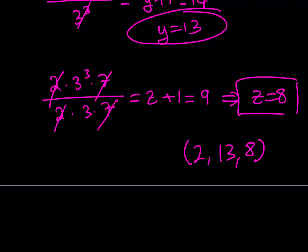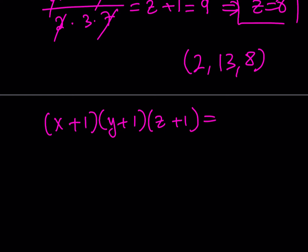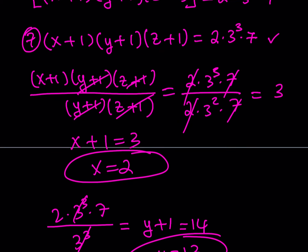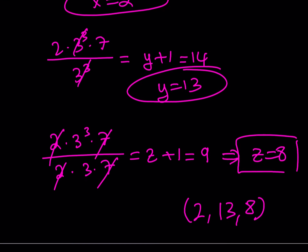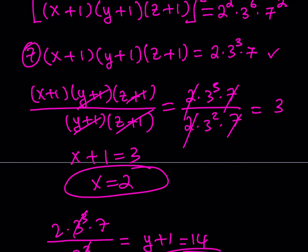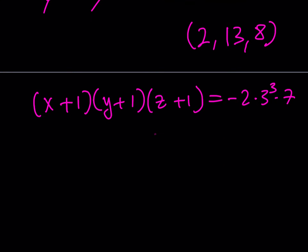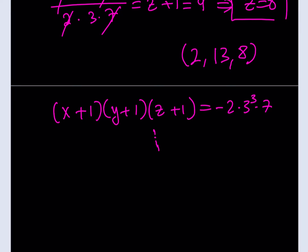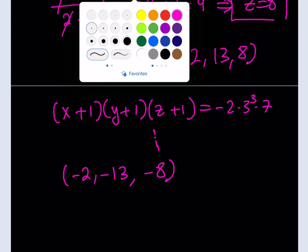Similarly, if we consider the negative square root, instead of equation 7 we obtain equation 8: (x plus 1)(y plus 1)(z plus 1) equals negative 2 times 3 cubed times 7. Repeating the same division steps, the denominator doesn't change — only the sign of the top flips — so everything just gets negated. This gives us a second ordered triple: (negative 2, negative 13, negative 8). And that brings us to the end of this video.